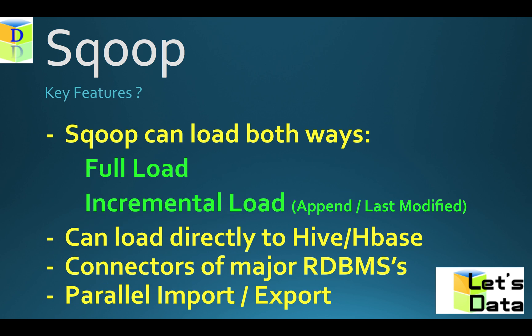Sqoop can load data both ways: full load and incremental. Full load means whenever the Sqoop job runs, it will delete the existing data and overwrite it. Incremental is append mode or last modified mode — used when the source data updates daily so you get updated data in your HDFS accordingly.